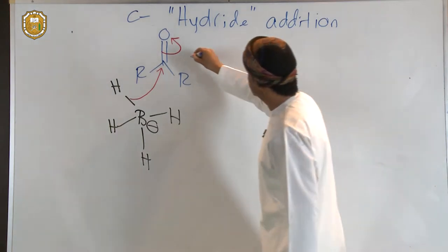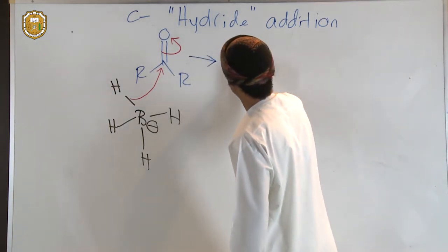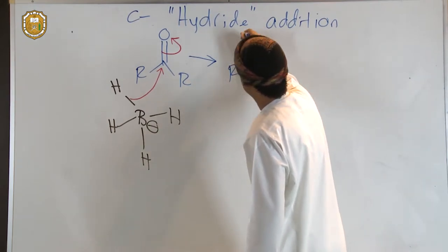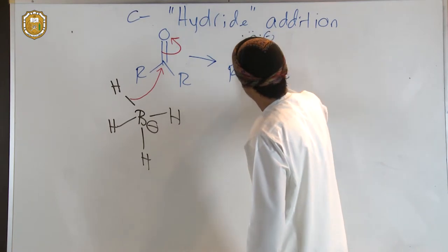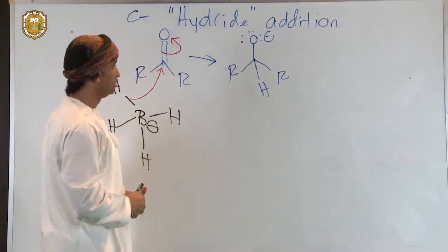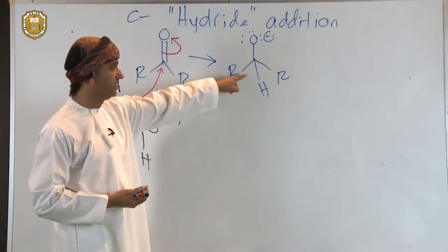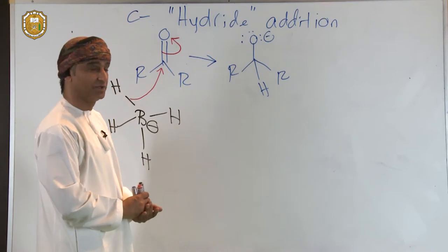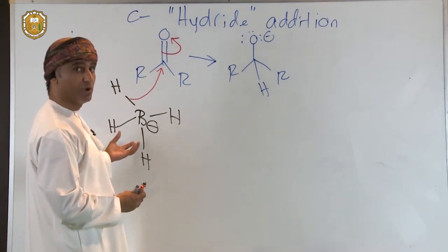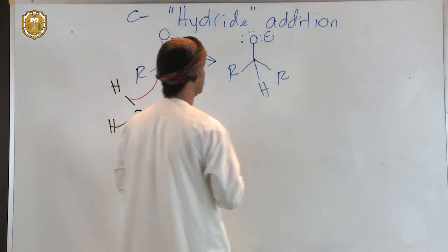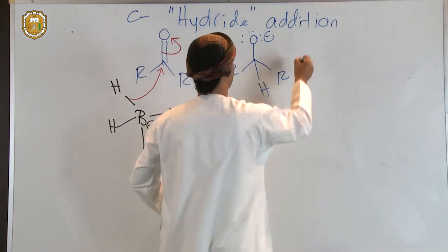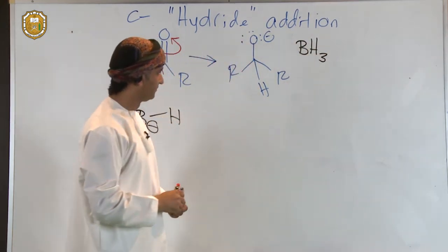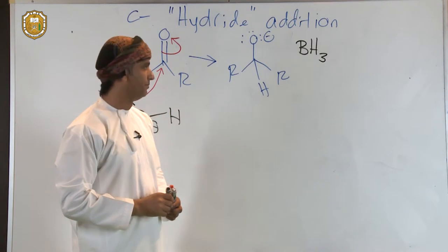So we can now write the intermediate alkoxide. And you can see now the bond, the new bond between hydrogen, that one between hydrogen and carbon. So we have this intermediate alkoxide plus what's left of the borohydride, which is BH3. So we have BH3 in addition to the alkoxide nucleophilic addition product.